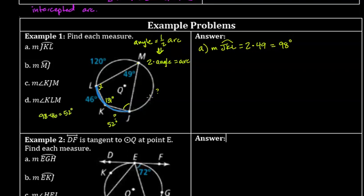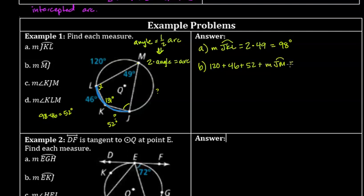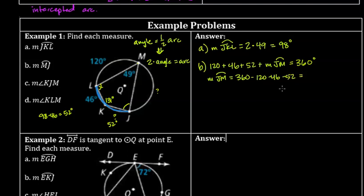Now, all the arcs around the circle must total 360 degrees. So 120 + 46 + 52 + the measure of arc JM = 360. Subtracting all the known arcs: the measure of arc JM = 360 − 120 − 46 − 52. That's 360 − 218, which is 142 degrees for arc JM.